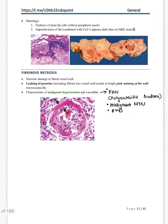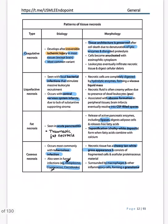The chalky white appearance is typical of fat necrosis. Fibrinoid necrosis: the name indicates fibrin material deposition — necrotic damage to blood vessel walls producing bright pink staining of the vessel wall. Remember using the three-letter rule: PAN (polyarteritis nodosa), malignant hypertension, and rheumatic heart disease.